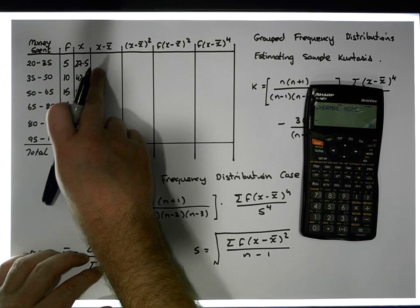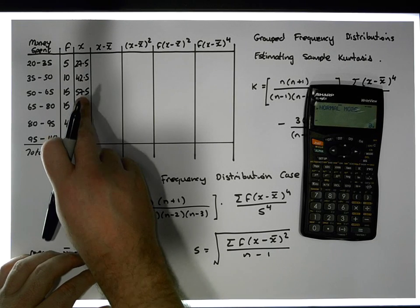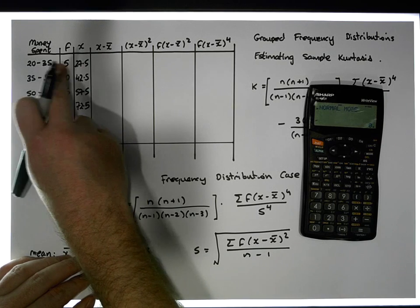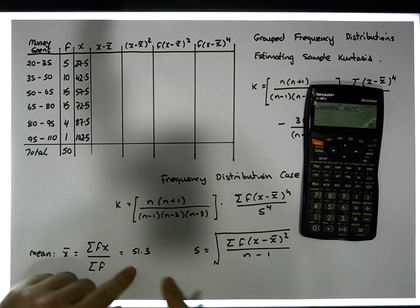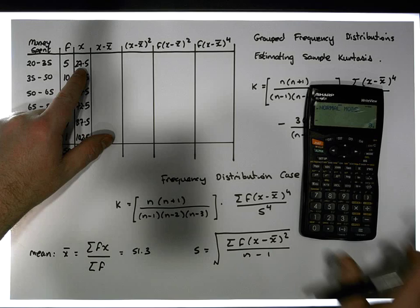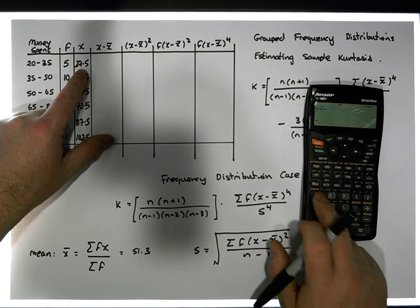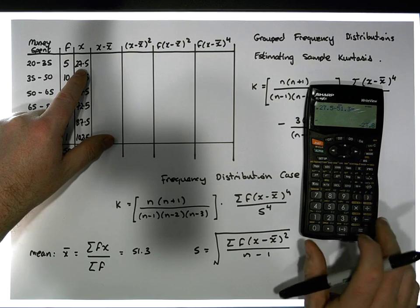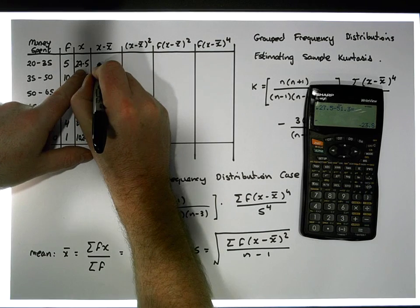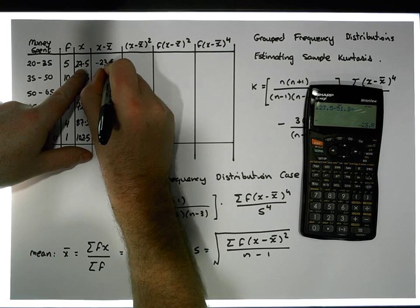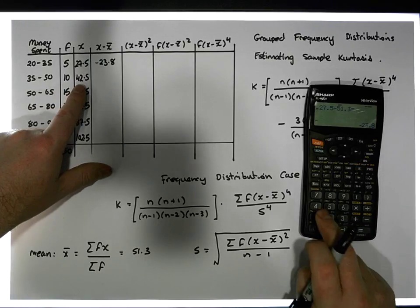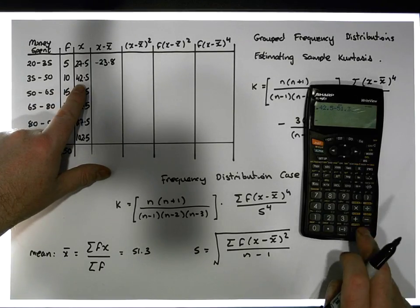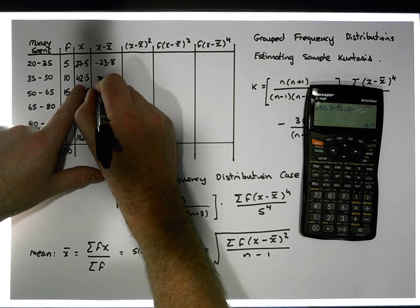Let's take the mean (51.3) away from each of our class representatives — the LSA values we're assuming to be the actual responses. The first one is 27.5 minus 51.3, giving us approximately minus 23.8. The next one is 42.5 minus 51.3, giving us minus 8.8.